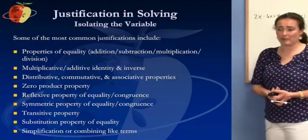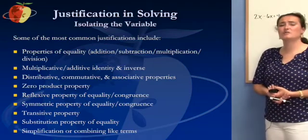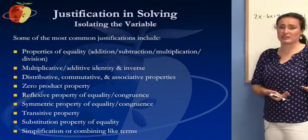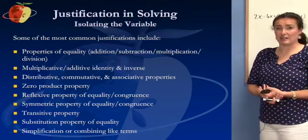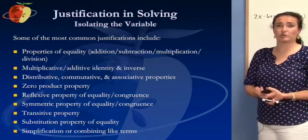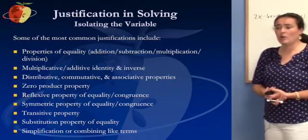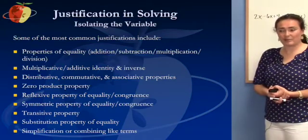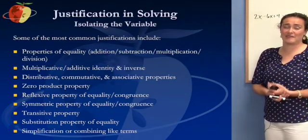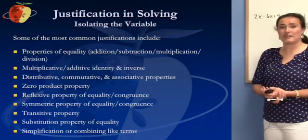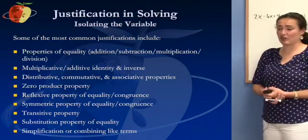We have the reflexive property of equality or congruence. That's when I'm saying that something is congruent to itself. We see this a lot in triangle proofs like congruence proofs or similarity proofs. We also have the symmetric property of equality or congruence, like if I have a plus b, that's equal to b plus a. Sometimes we see that in triangle proofs as well.